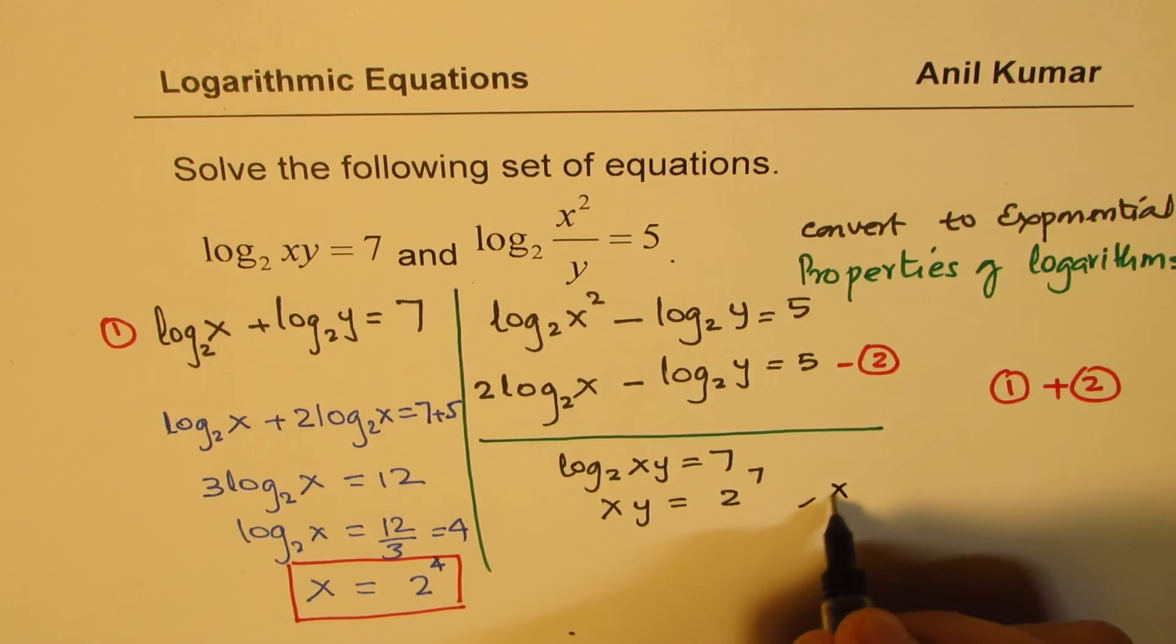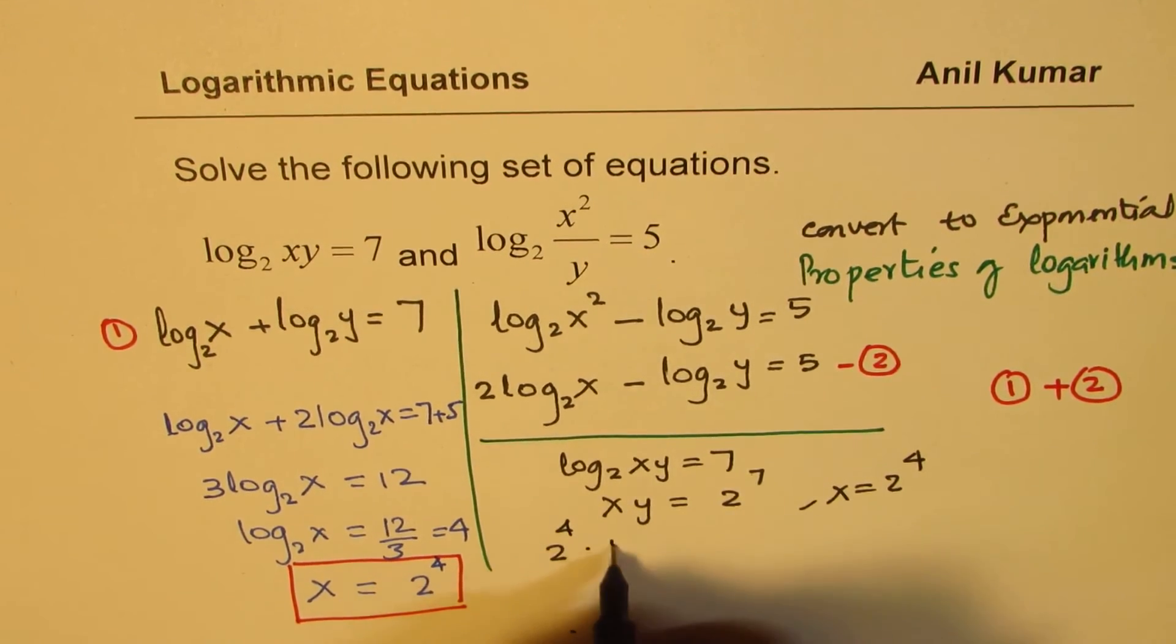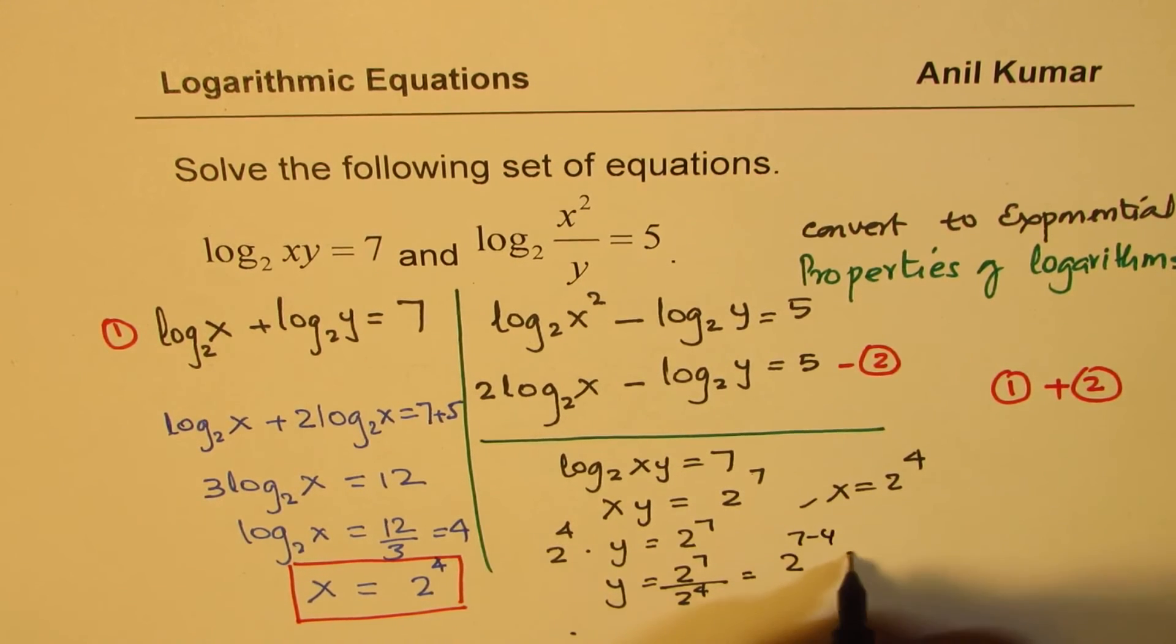So I'll write 2 to the power of 4 times y equals 2 to the power of 7. So y is 2 to the power of 7 divided by 2 to the power of 4, which is 2 to the power of 7 minus 4, or 2 to the power of 3. That gives you the answer as 8.